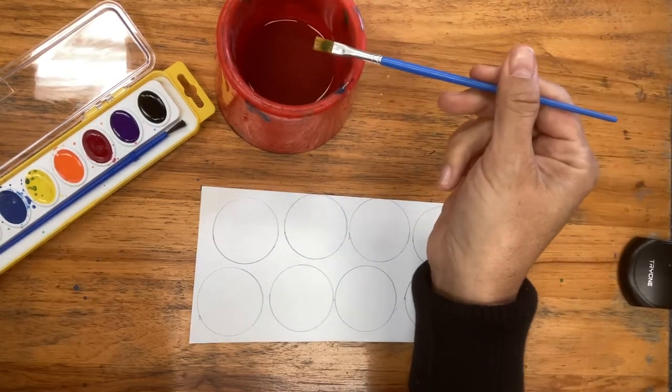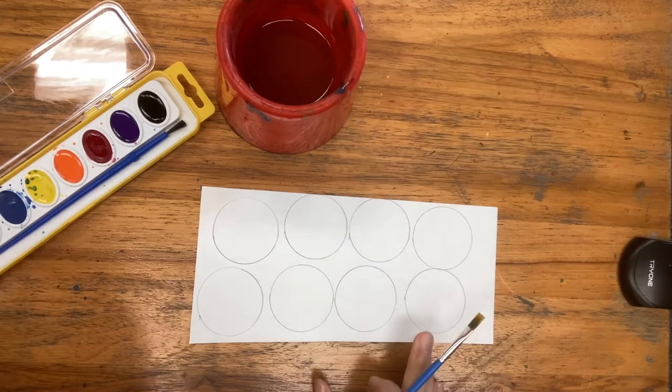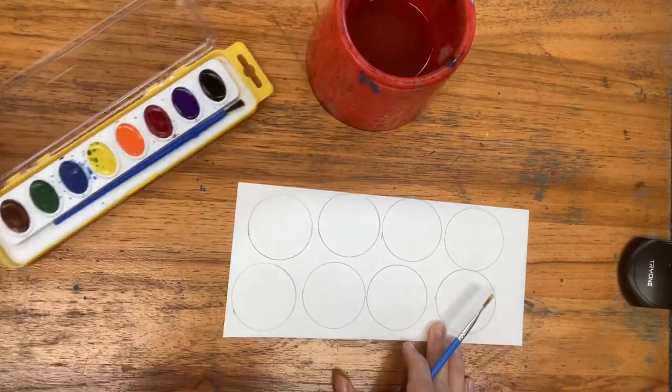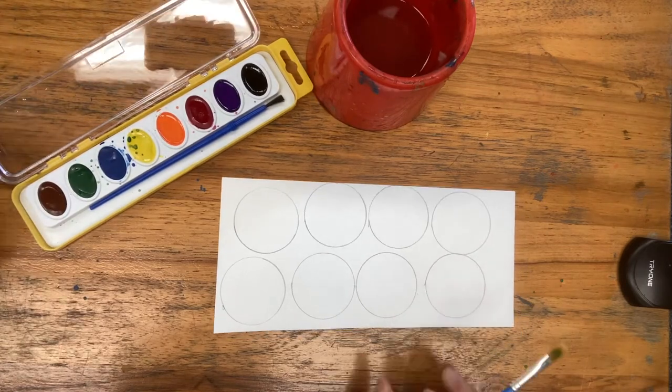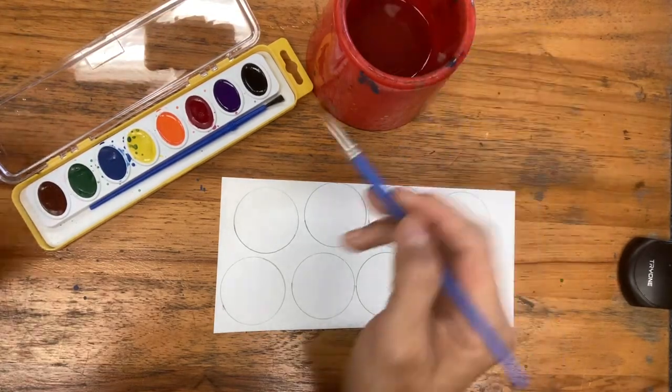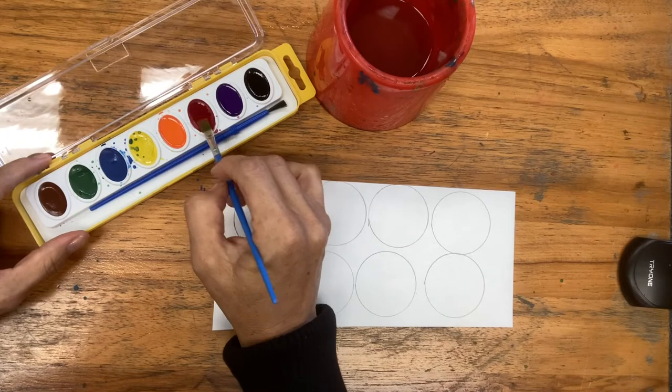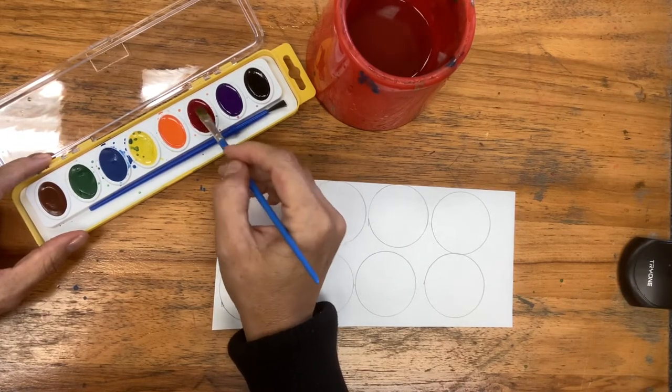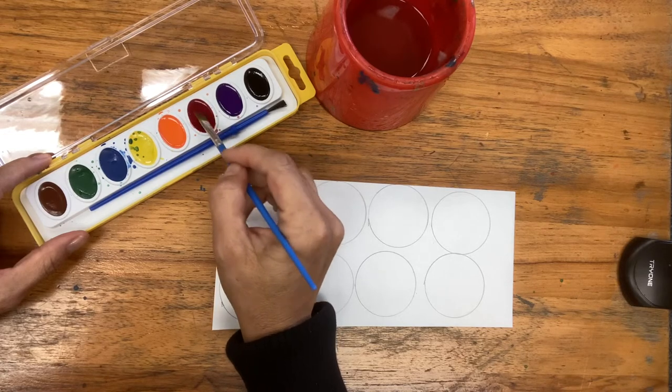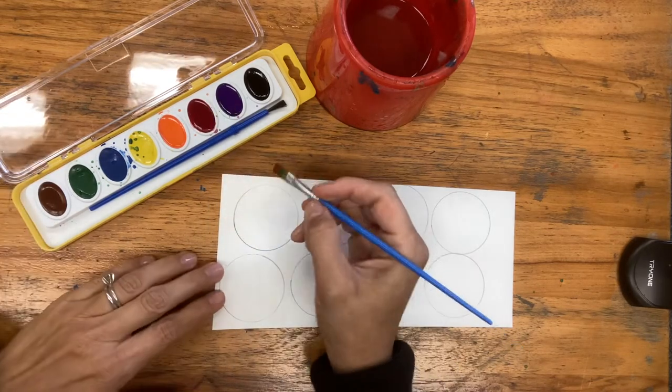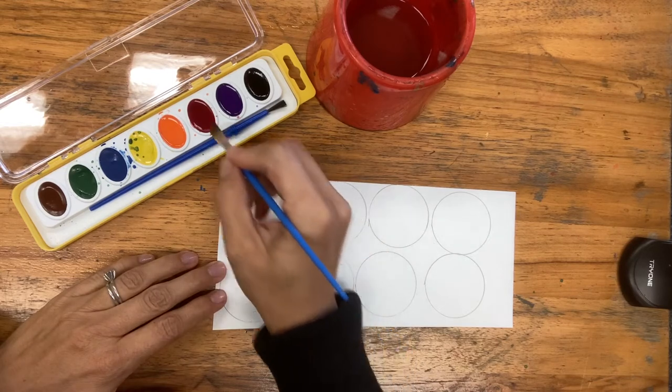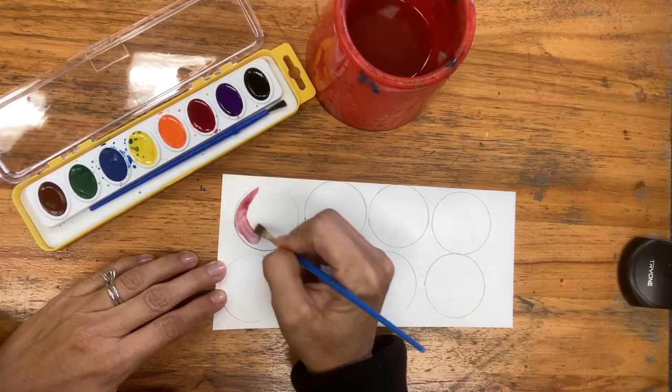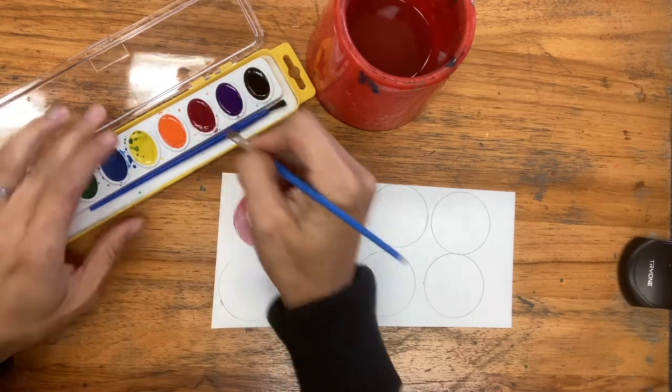I'm going to wet my brush and I'm going to choose which color. Well I'm going to start with the primary color so which primary color do I want to start with. I'm going to start with red. I'm going to gently get my red watercolor wet just very gently. And I'm going to do this entire gumball with my red watercolor.